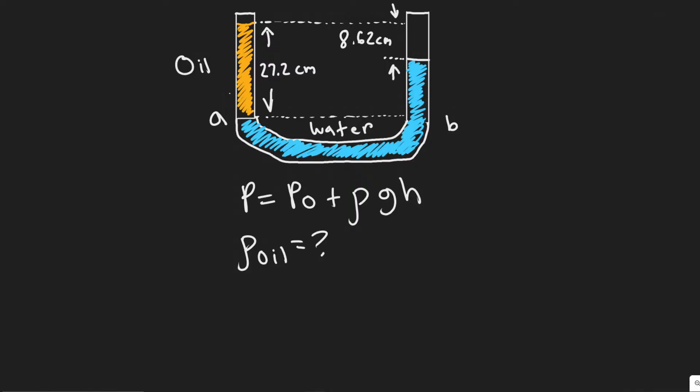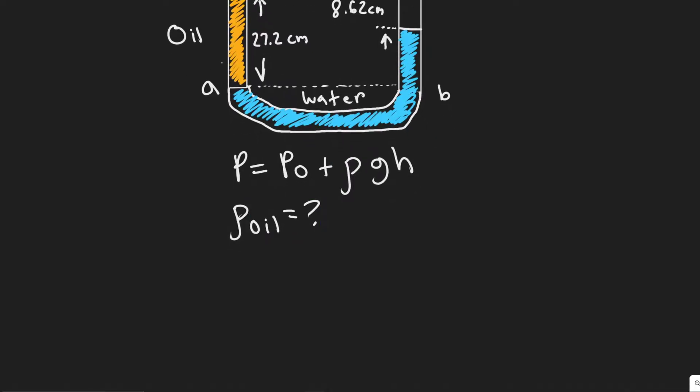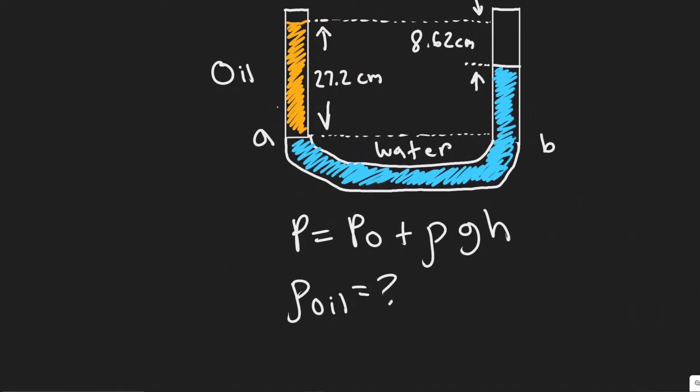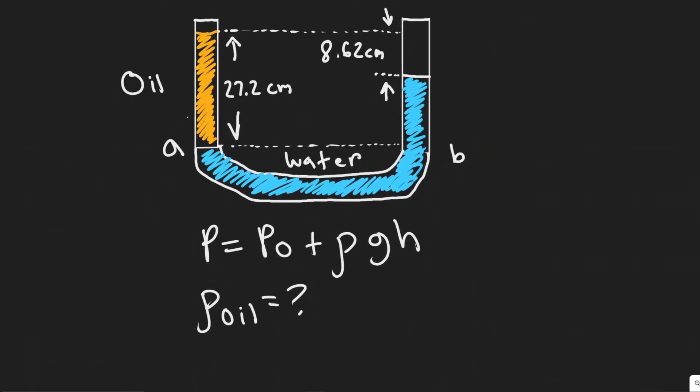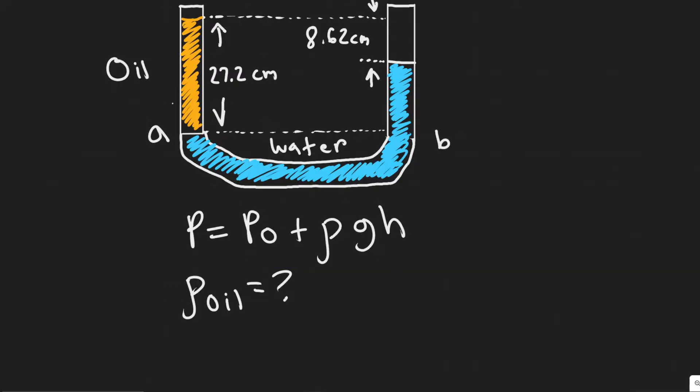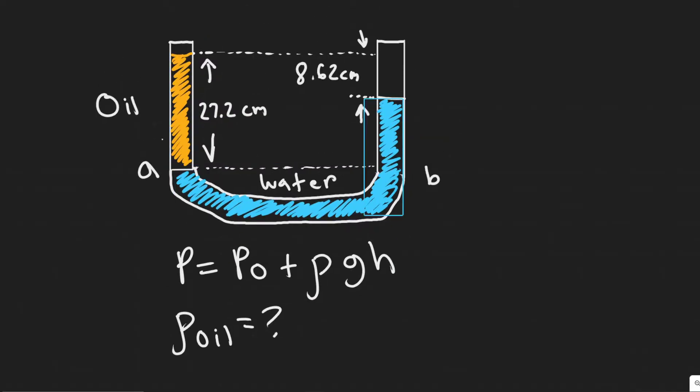And so the way we're going to do this is by using pressure. So you need to know the formula for pressure is pressure equals the initial pressure of the outside plus the density of our liquid here times gravity times the height. And so keep in mind, density or rho is just the density of the liquid, so whatever liquid we're referring to. And then we have g, which is the acceleration due to gravity, that's a constant.